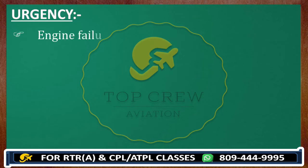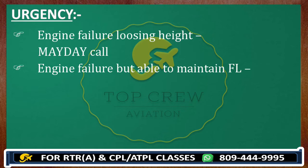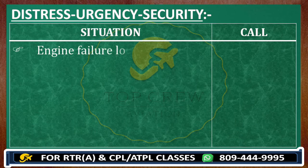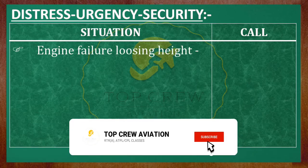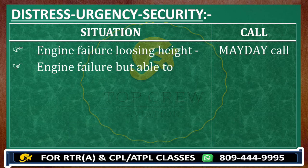In case of engine failure losing height rapidly, that would be a Mayday call. But in case of engine failure and you are able to maintain flight level, that would be a Pan Pan call. In case of primary control failure — like rudder, elevator, or aileron — anything which is not working or has been jammed, you will get a Pan Pan call.